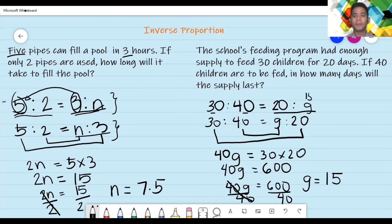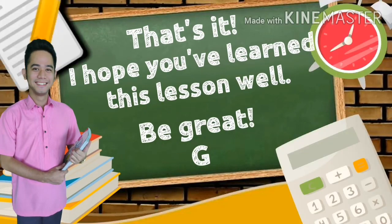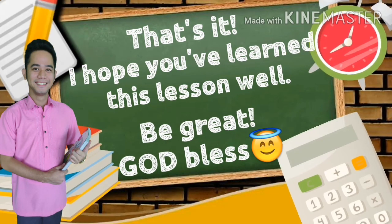Okay, ibig sabihin, ang magiging sagot natin dito sa problem — sa question: in how many days will the supply last, kung 40 na ang kakain — ang sagot doon: it will last for 15 days. Yung G, 15 days. So, that is how we solve problems involving inverse proportion. Thank you.